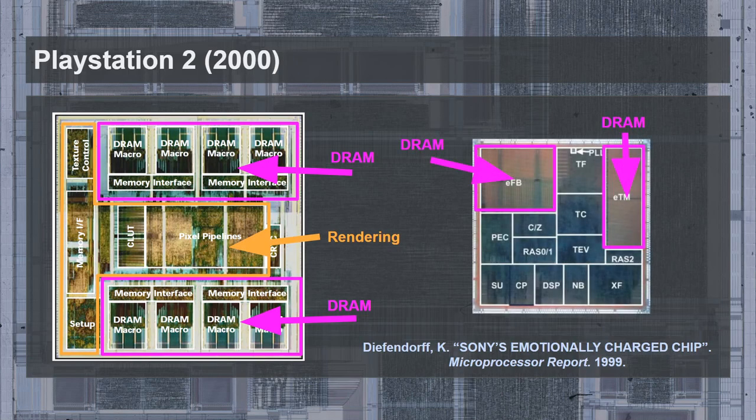A similar approach was taken with the Nintendo GameCube, making the compromise to only store the frame buffer internally, in addition to a large DRAM-based texture cache. The main texture memory was external, allowing for larger textures than the PlayStation 2 could support without needing to constantly replace them with the CPU.